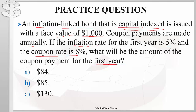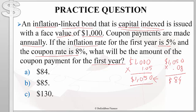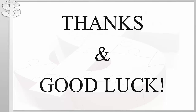Since this bond is capital indexed, we will adjust the face value to reflect inflation. We take the initial face value of $1,000 and adjust it to reflect inflation of 5%, then multiply this higher amount by the coupon rate of 8% — and therefore A is the correct answer. It's worth noting that there are other kinds of inflation-linked bonds that are not capital indexed; for example, they may be interest indexed and work a bit differently.